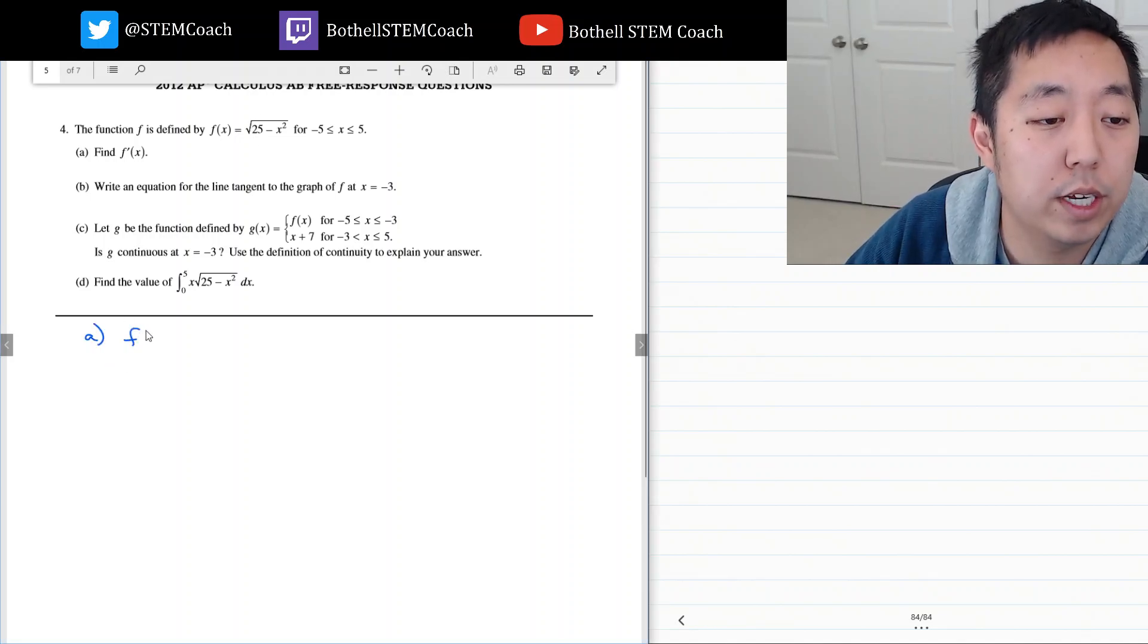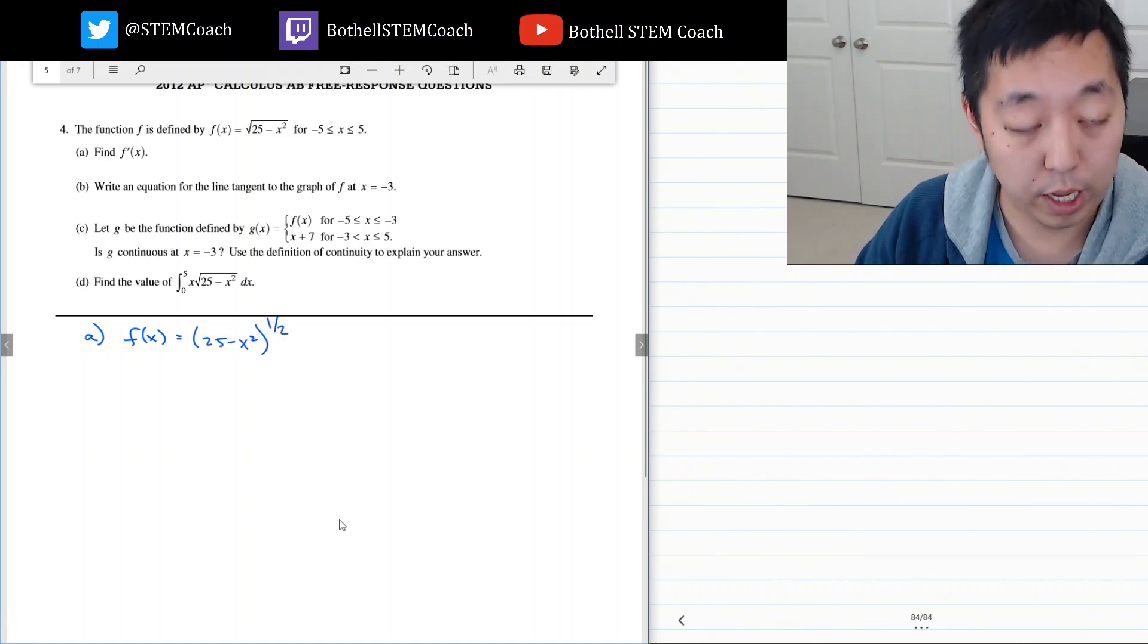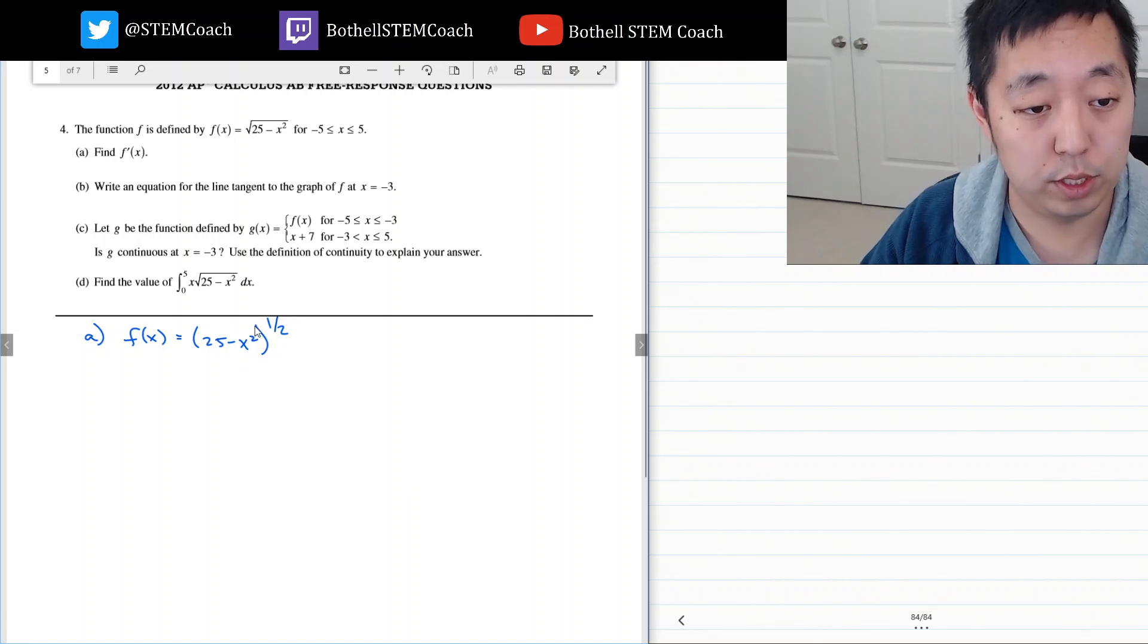So I write, when I do these I always, whenever I see radicals I always want to write them as exponents so I can apply all the proper rules. So square root is like this, one half.